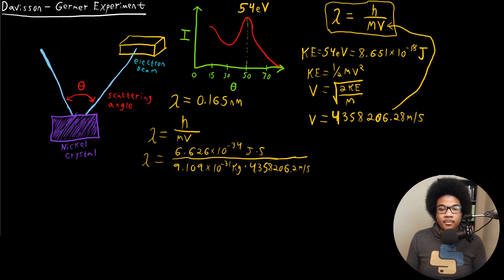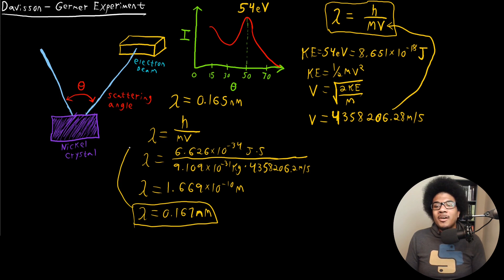Everything should cancel out to give you a final unit in meters. So we got 1.669 times 10 to the negative 10 meters. So if you convert that to nanometers, you get 0.167 nanometers, which very closely matches what we got from the experiment.